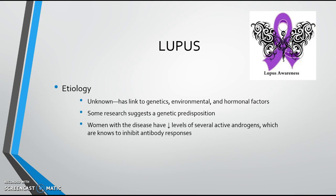Lupus is considered an autoimmune disease, which means the body develops an immunity to its own self. The etiology of lupus is unknown; however, autoimmunity is related to genetic, environmental, or hormonal factors. Women with lupus seem to have decreased levels of some active androgens or hormones, which can inhibit antibody responses. So they're trying to figure out why the body turns on itself, but they don't know yet.